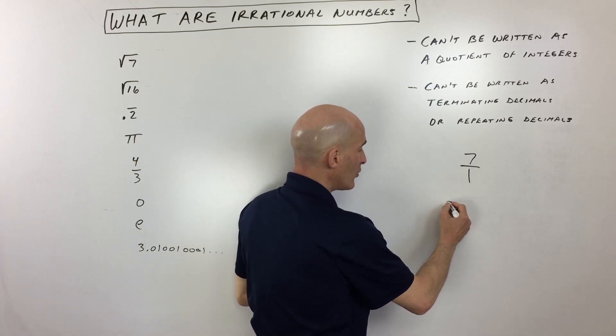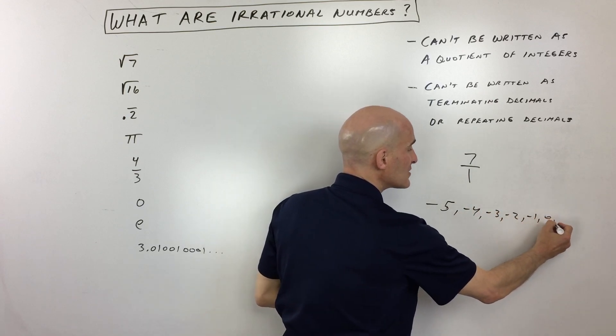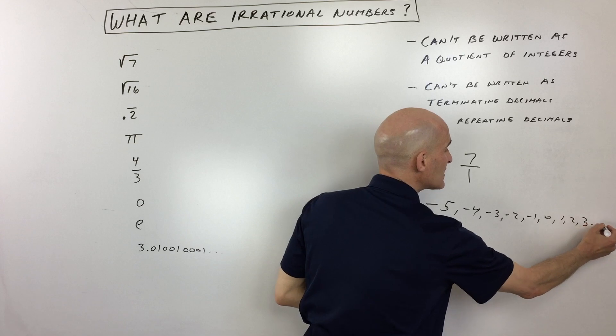say for example, negative 5, negative 4, negative 3, negative 2, negative 1, 0, 1, 2, 3, dot dot dot, right?